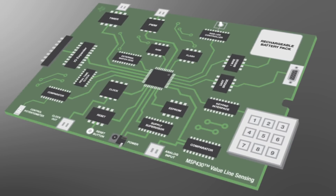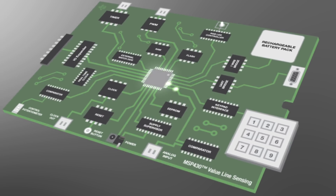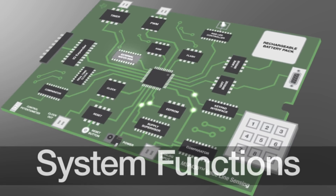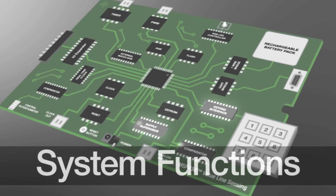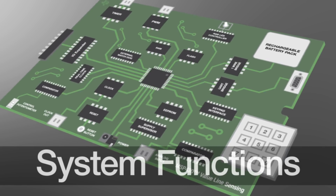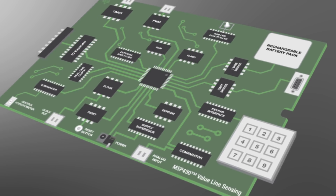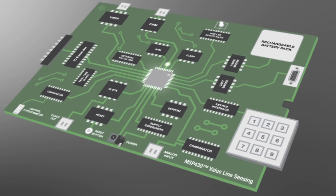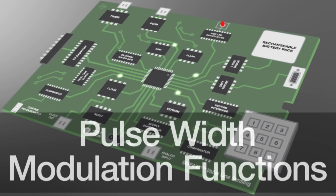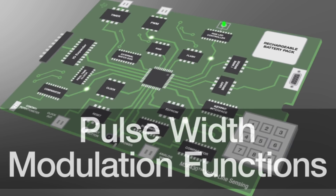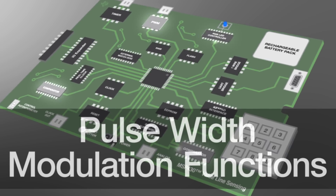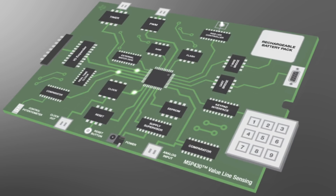Divided into four functional categories — system housekeeping, pulse width modulation, timer, and communications — these code examples have been chosen as they are frequently used PCB and system level functions.